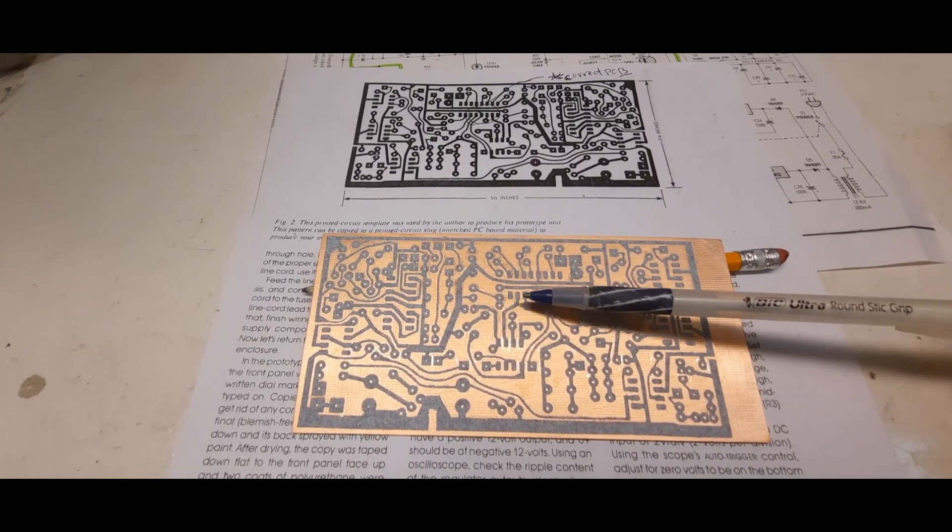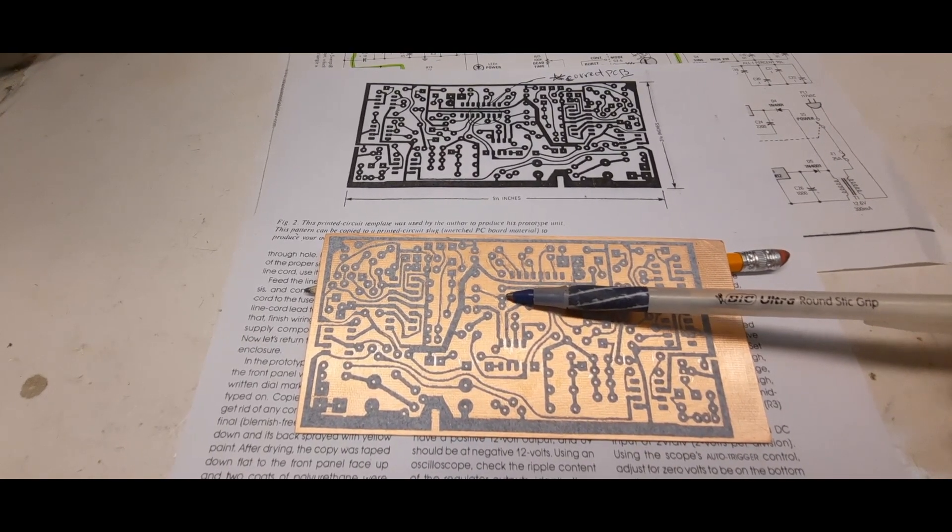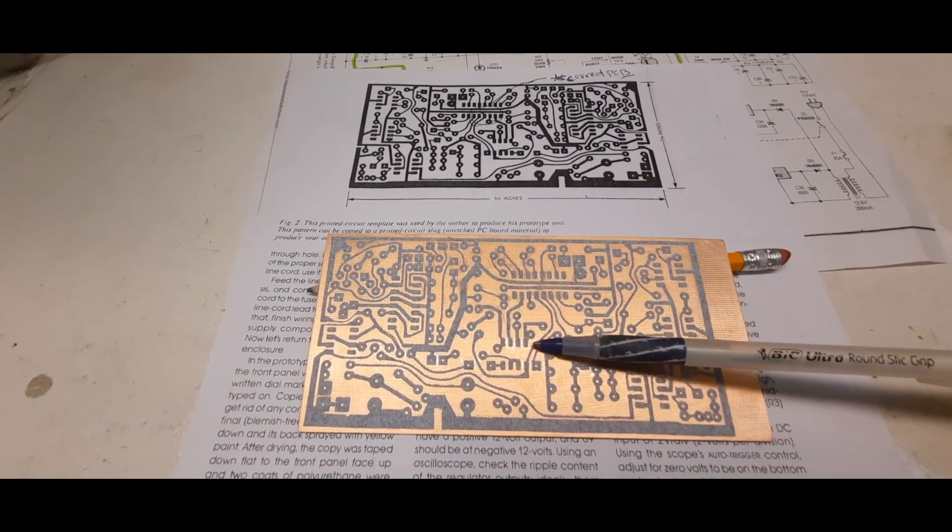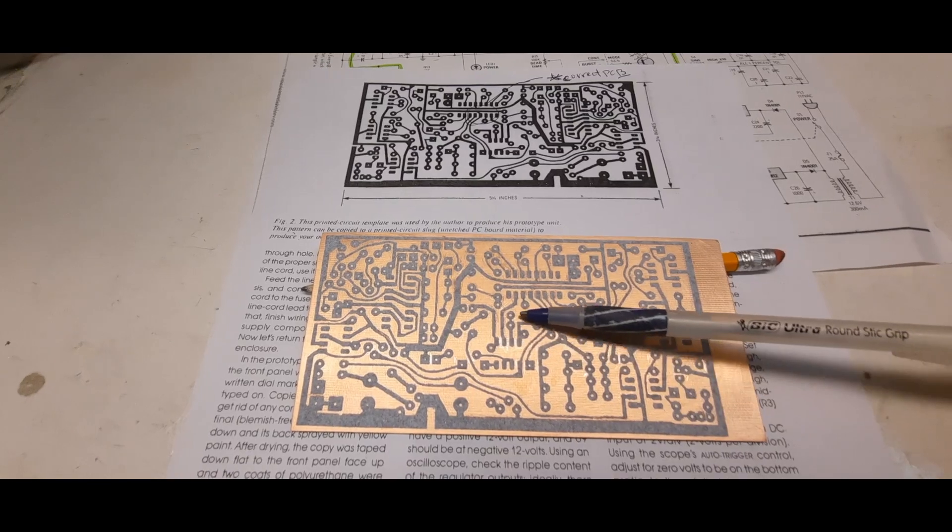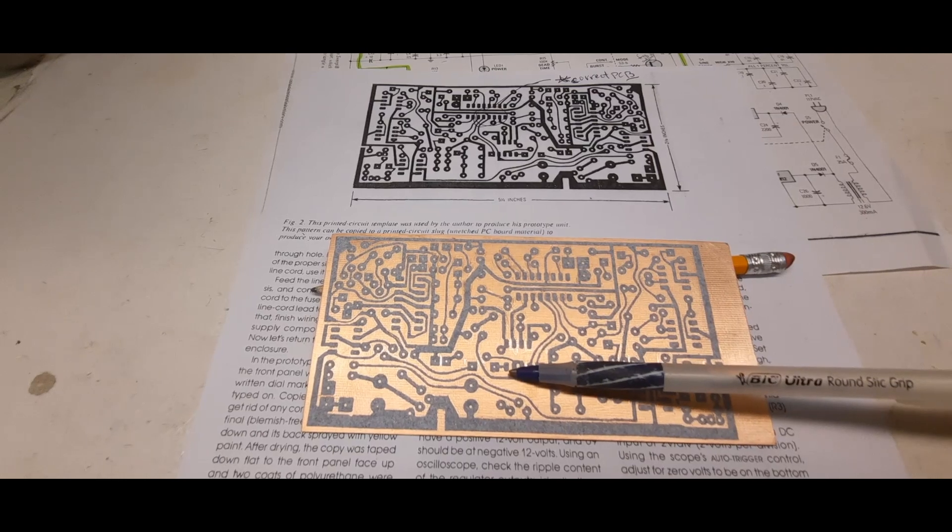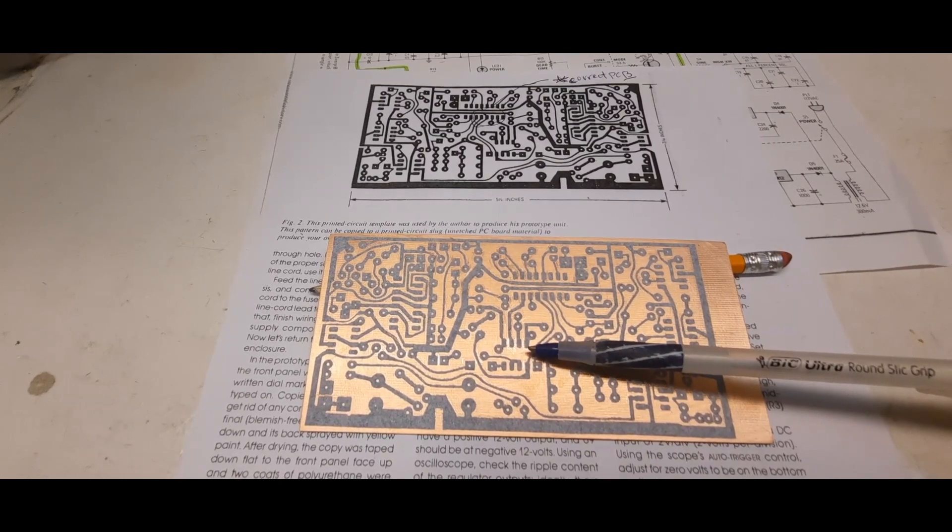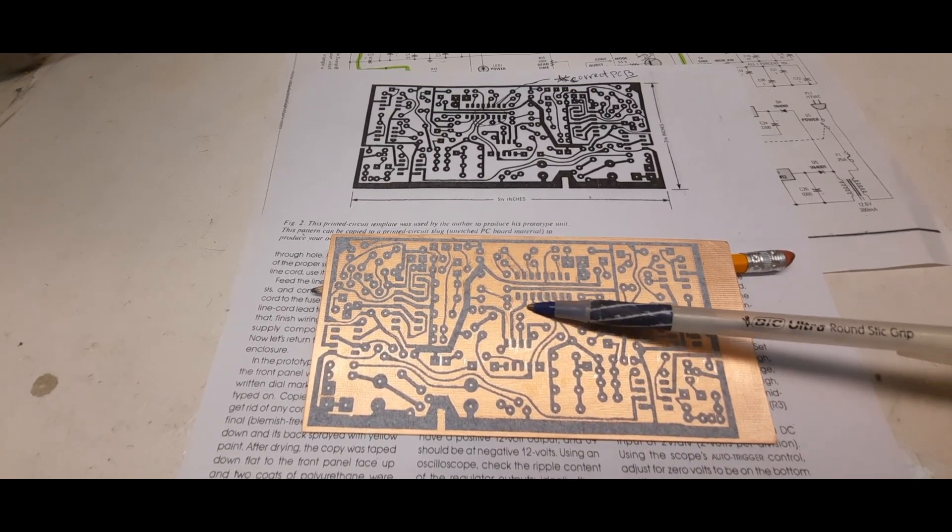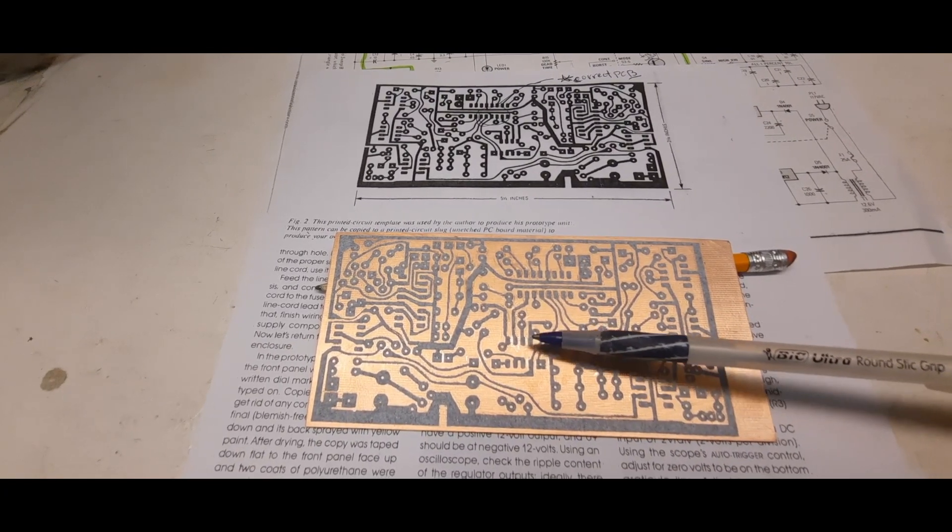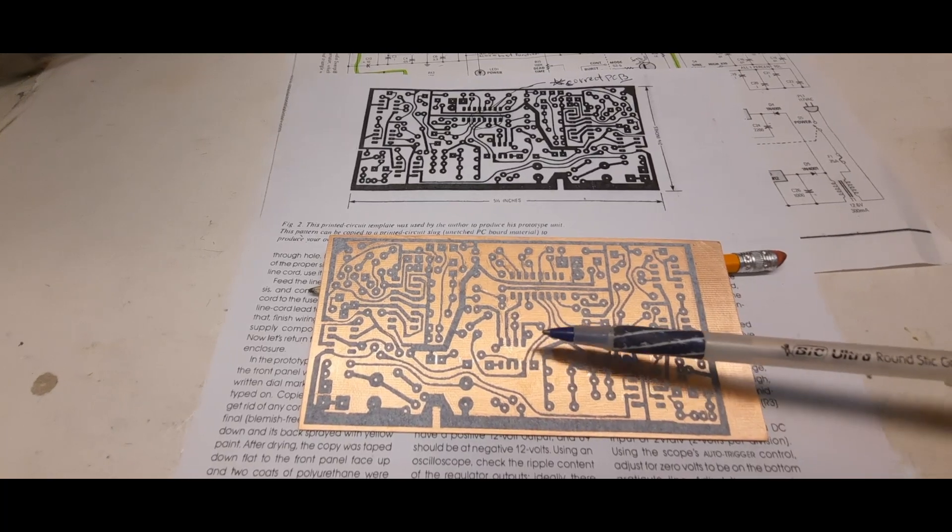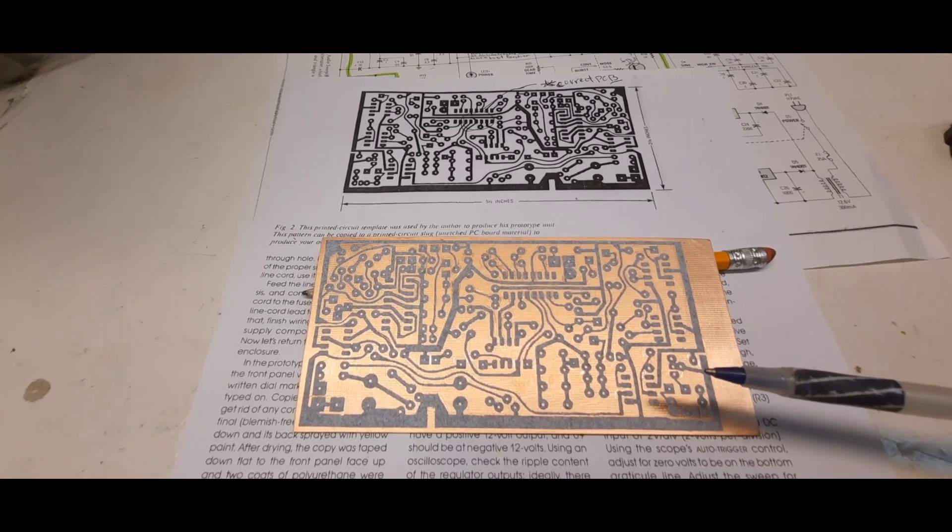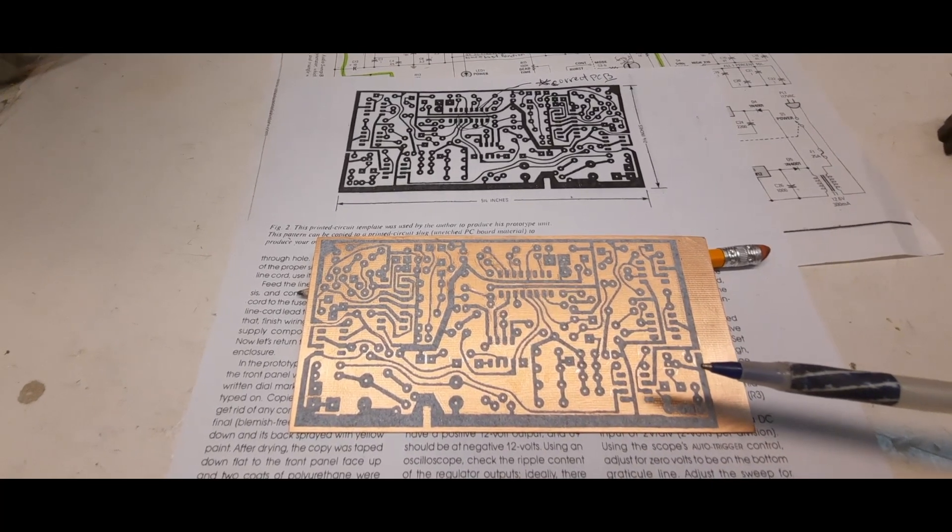I've double checked to make sure the pins are correct. Pin 2 on the XR 2206 goes to pin 2 of the op amp, which is correct. This time I'm going to have to put pin 1 over here, but that's okay, it'll all work out.